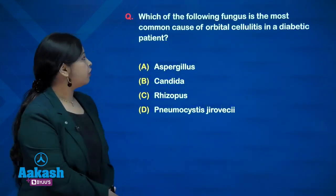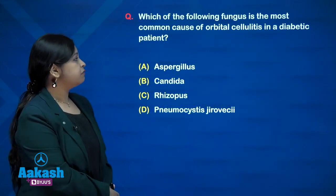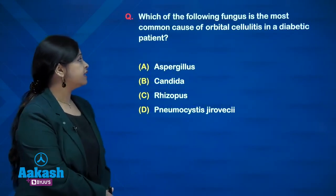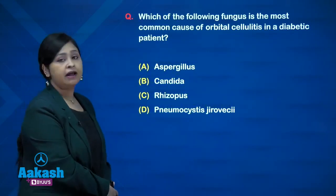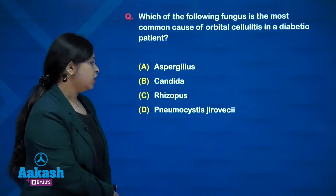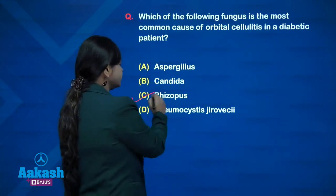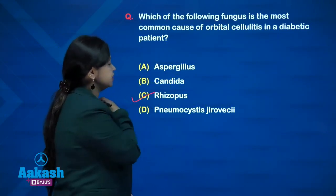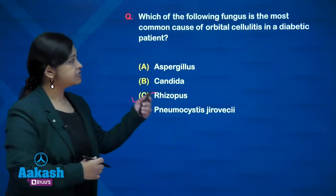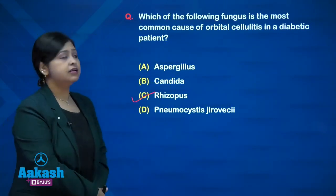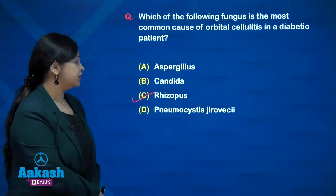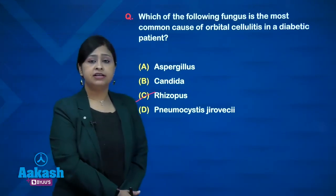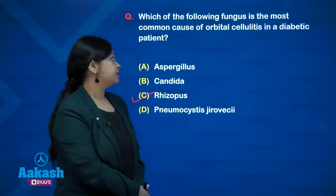Which of the following fungi is the most common cause of orbital cellulitis in a diabetic patient? The answer is Rhizopus. Aspergillus can also cause such infections but in a diabetic patient the most common cause is Rhizopus.